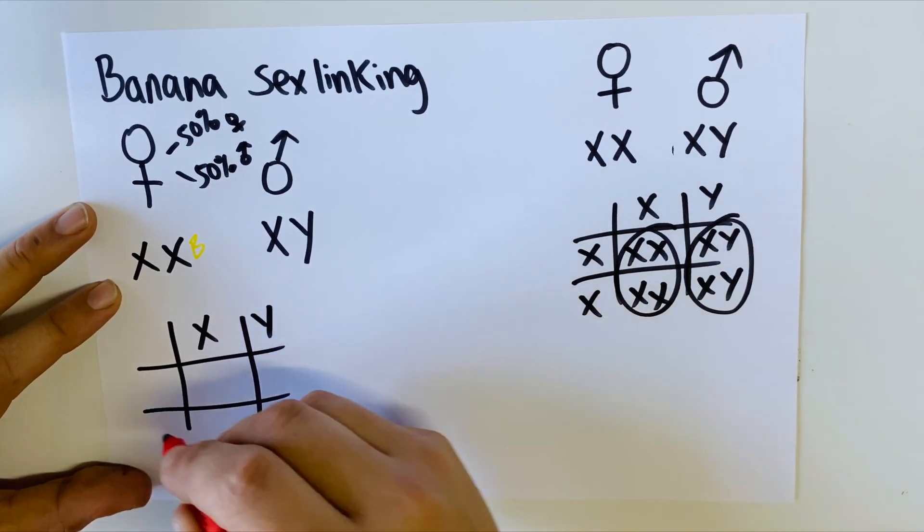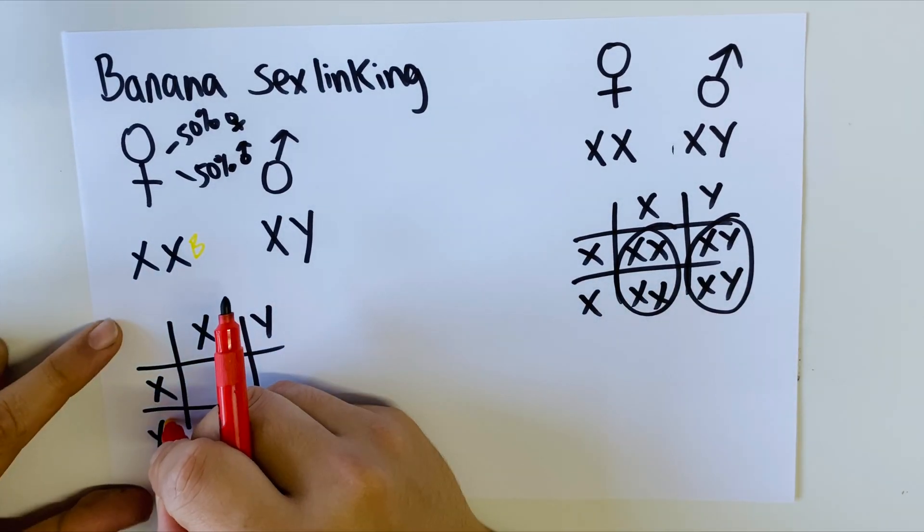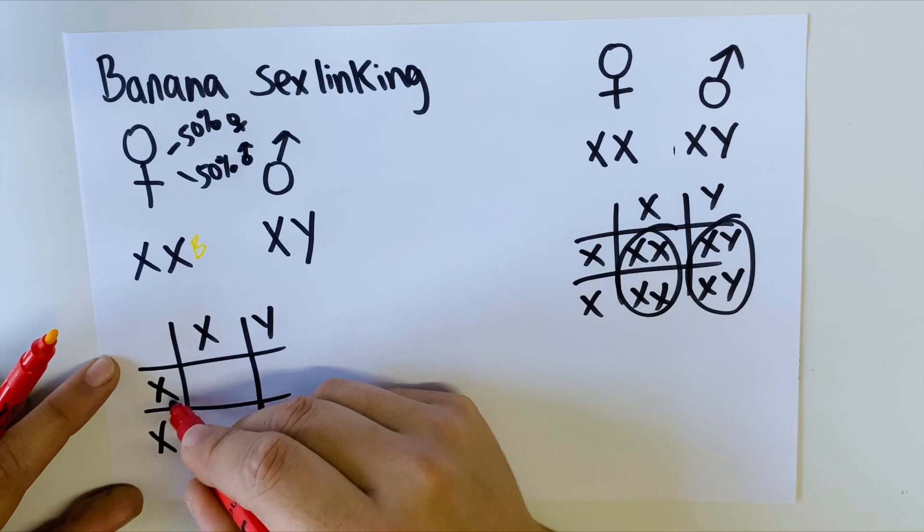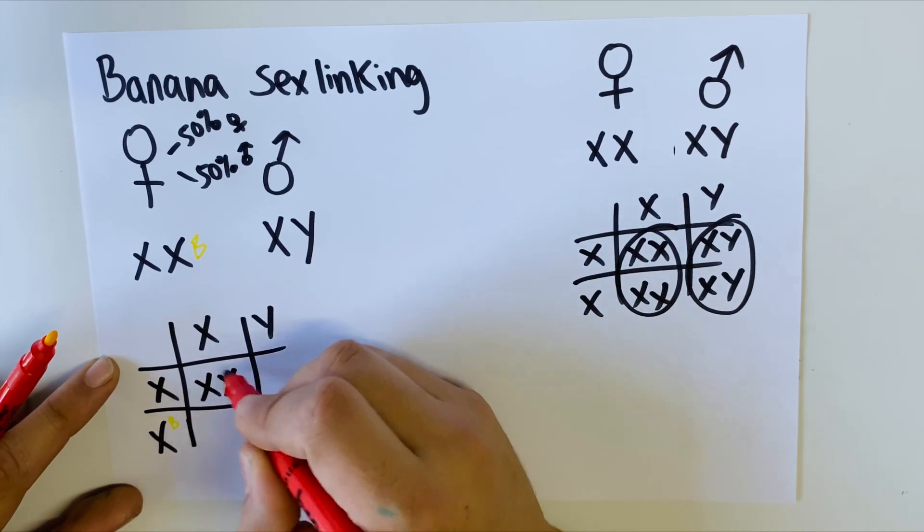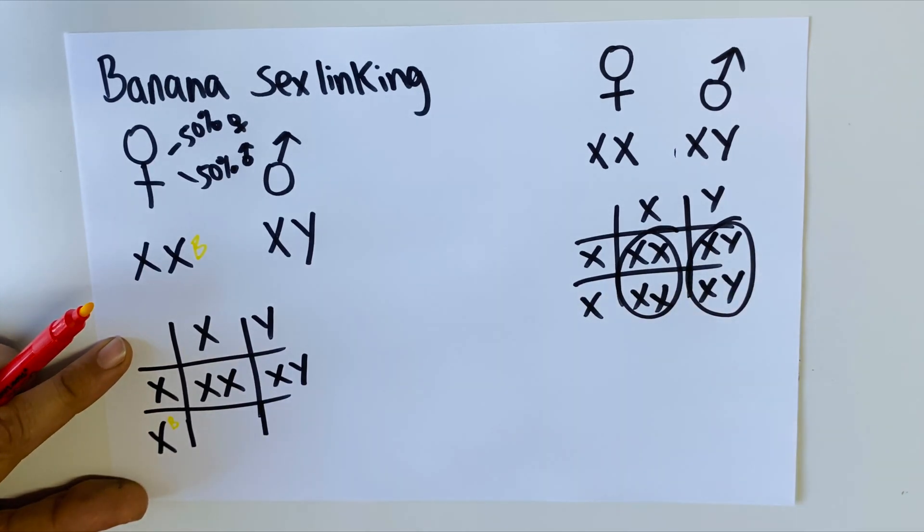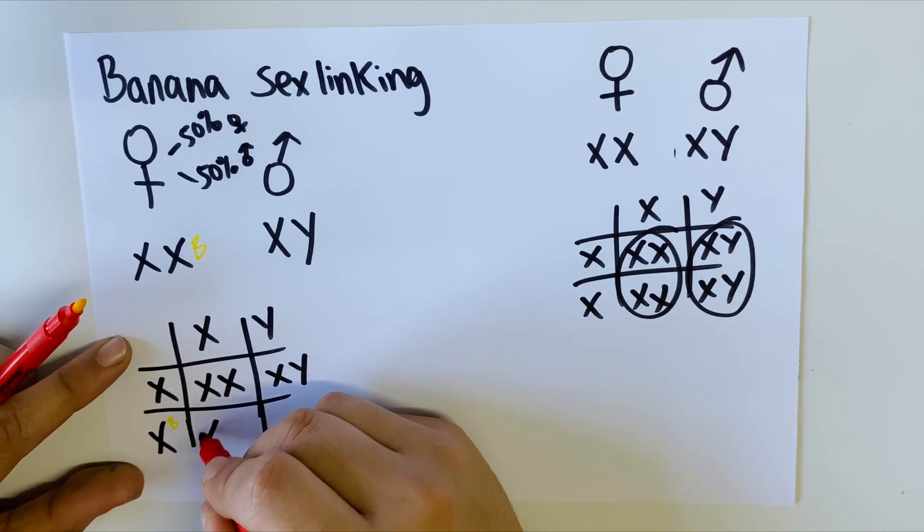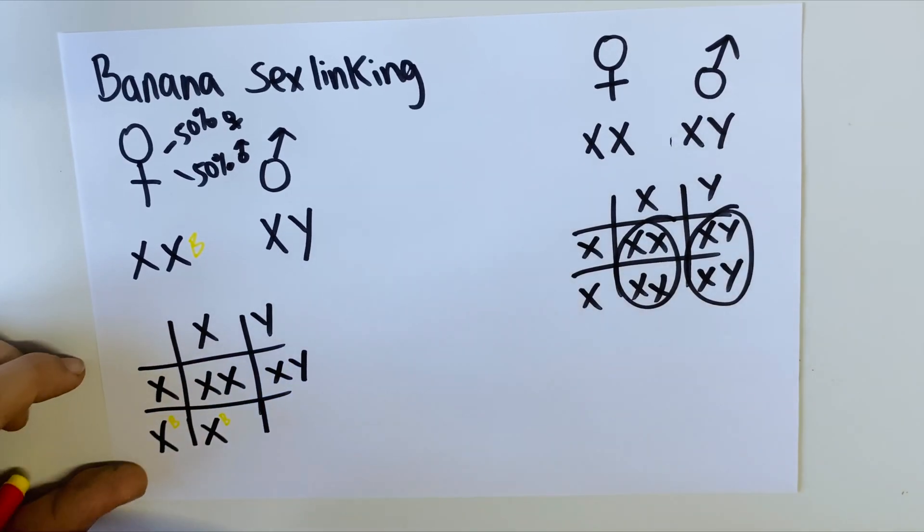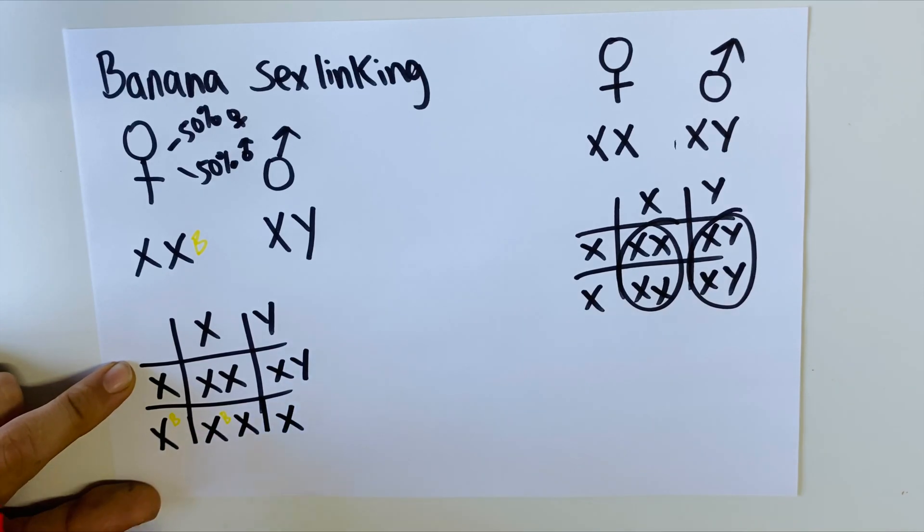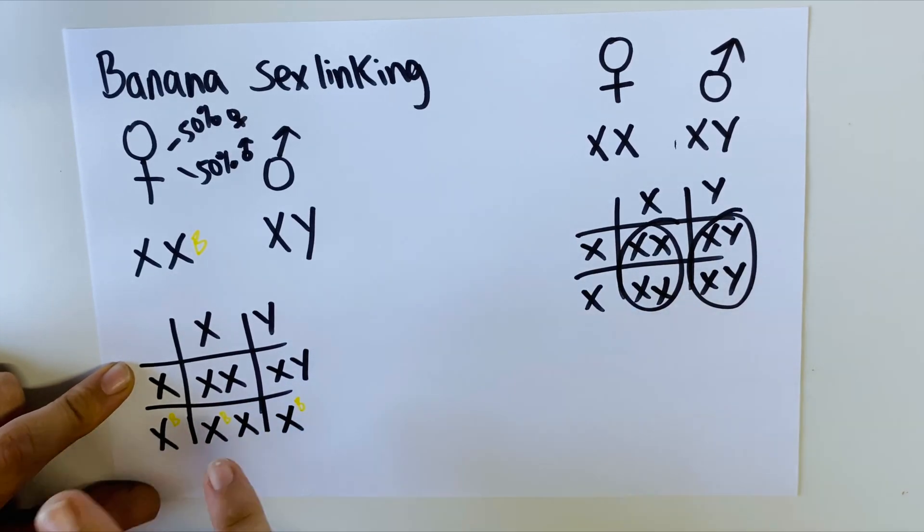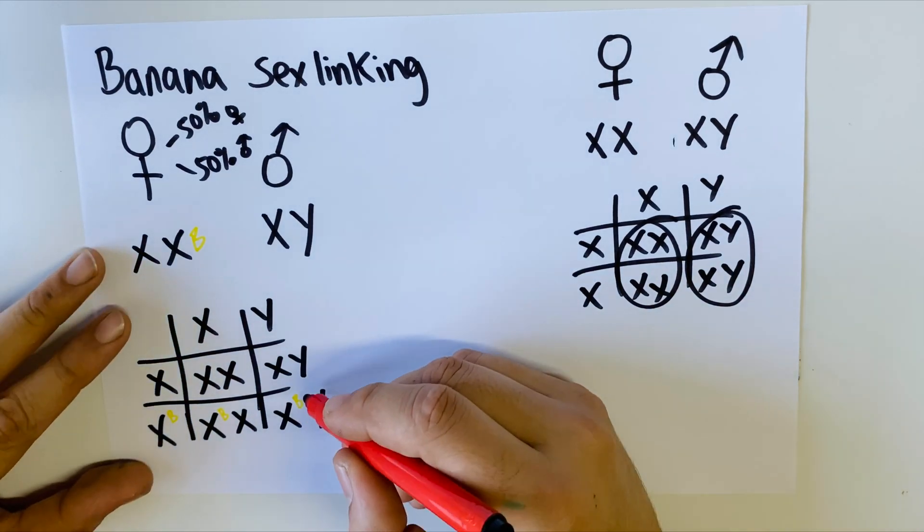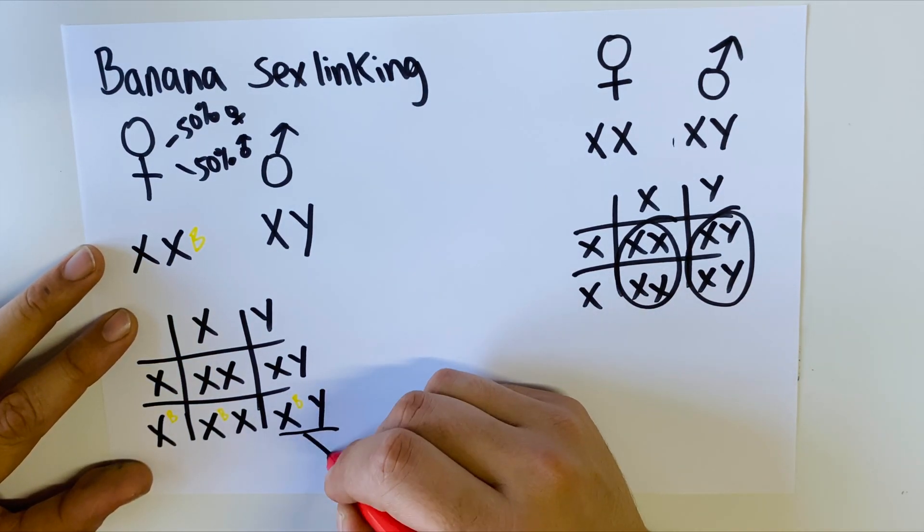A female banana ball python can produce 50% female bananas or 50% male bananas. In actual fact, a banana female ball python can produce either male or female in equal ratio. If we look at that here: we have XY from the male, we have X from the female, and the other X has the little B attached to it, the little banana gene. In this case you have XX, so you have a female ball python without banana. You have a male ball python without banana. But here this animal, this X with the banana gene, is now a female banana ball python.